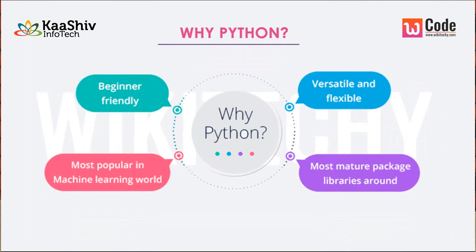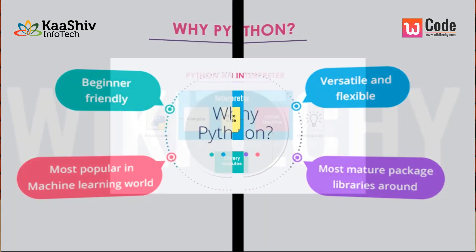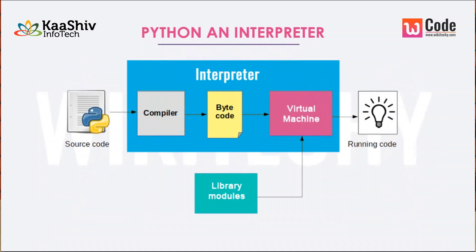We have many different technologies and libraries available. Python has a source code, and we are now using Python source code. You can use a Python compiler and write the compiler in Python. You can use a virtual machine to get the final code.